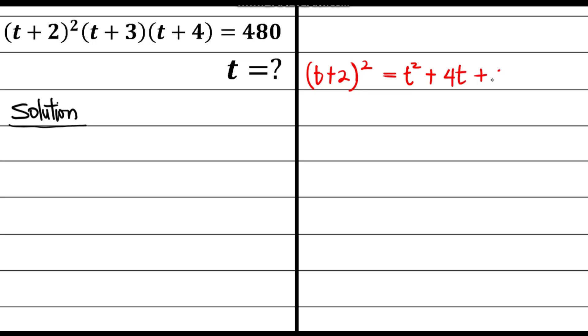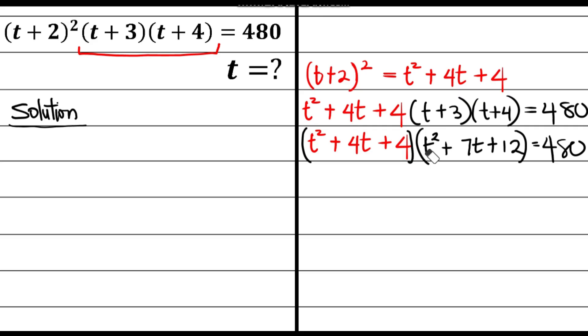t plus 2 squared is going to be t squared plus 4t, then plus 4, then bringing out this side, all these into t plus 3, then t plus 4, all equal to 480. To choose to multiply this all out is going to consume a lot of your time, because t plus 3 into t plus 4 is the same thing as t squared plus 7t, then plus 12.